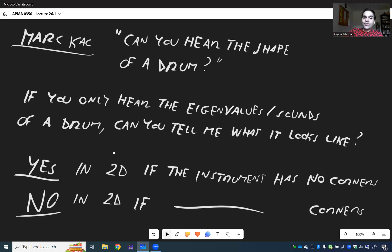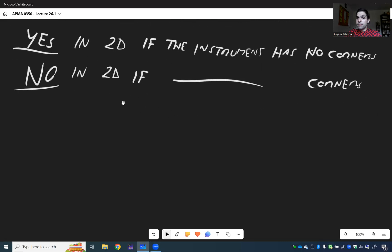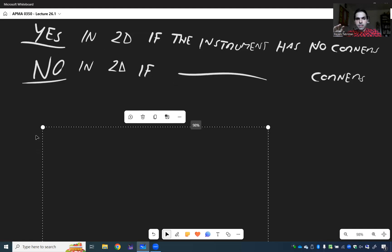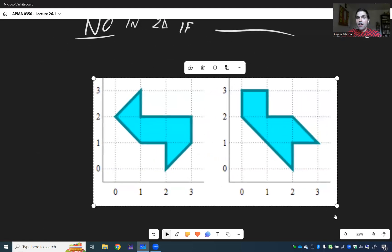In fact, I want to show you a cool illustration of two instruments with different shapes that have the same sounds. Hopefully it will work. So you see, we have those two things. I mean, it kind of looks like Texas a bit. So the left thing and the right thing, they of course have different shapes, but they play the same sound.